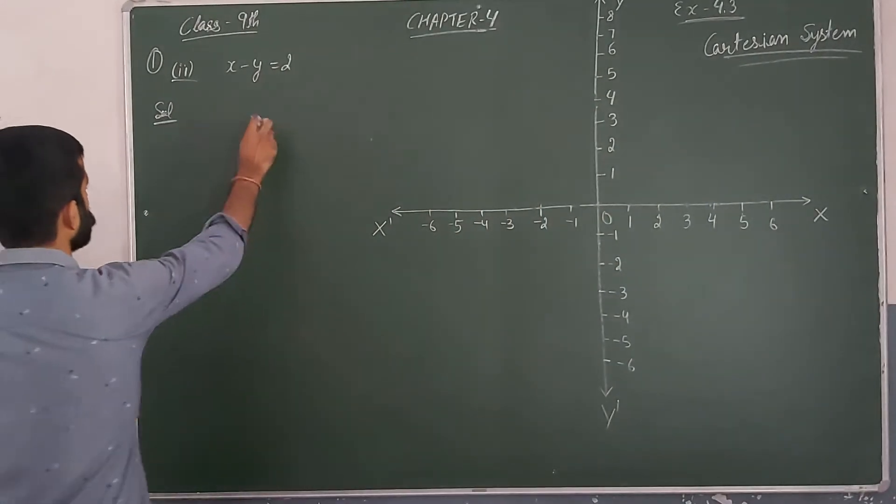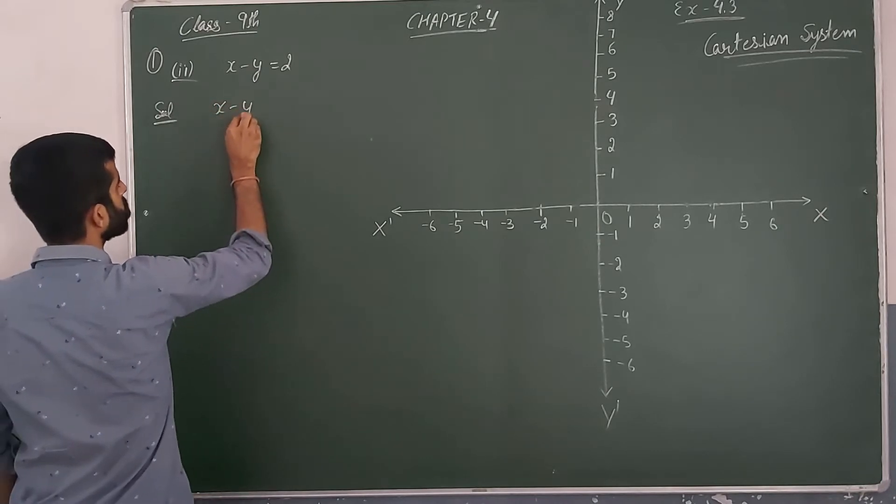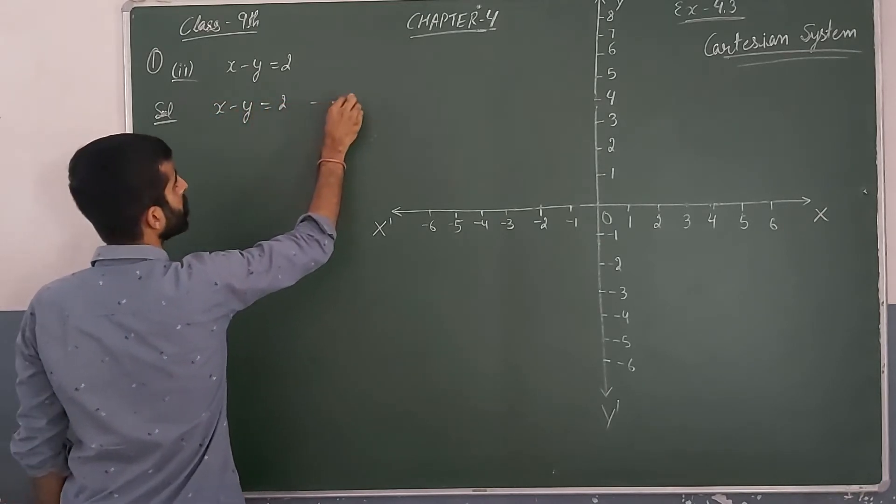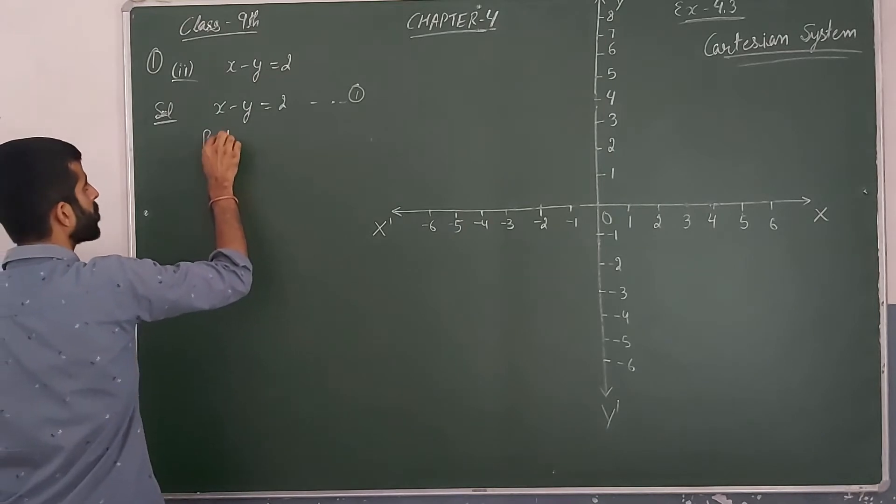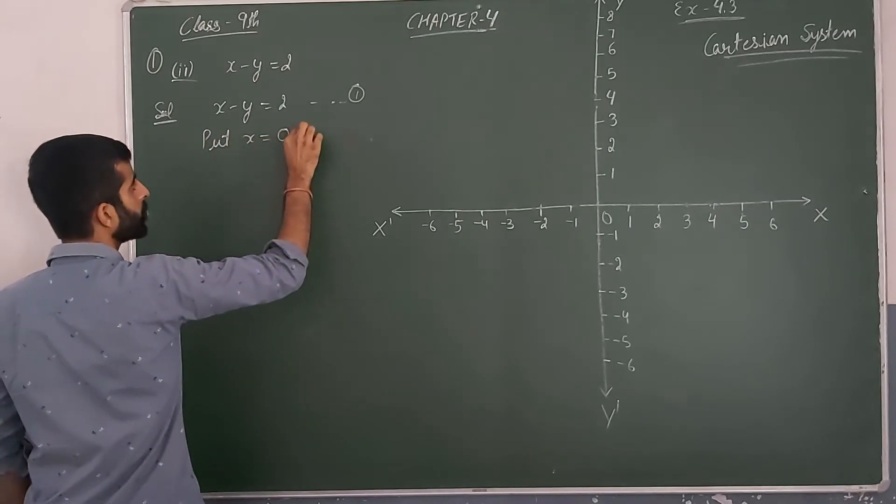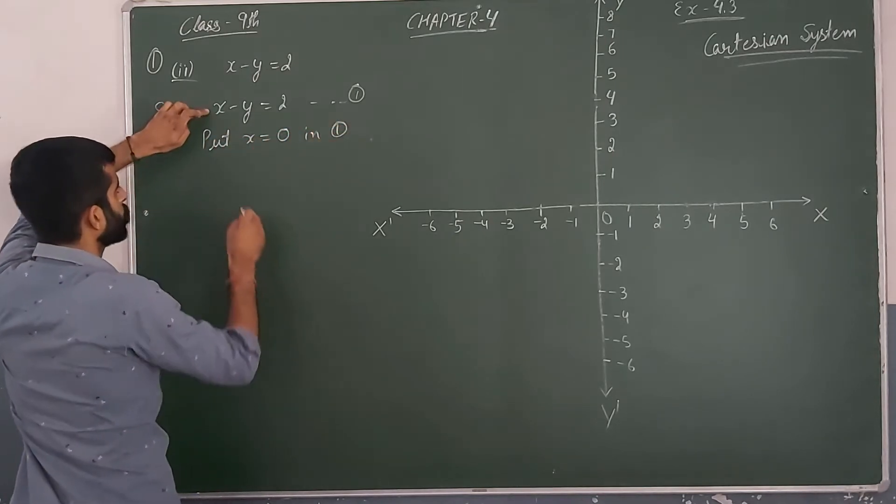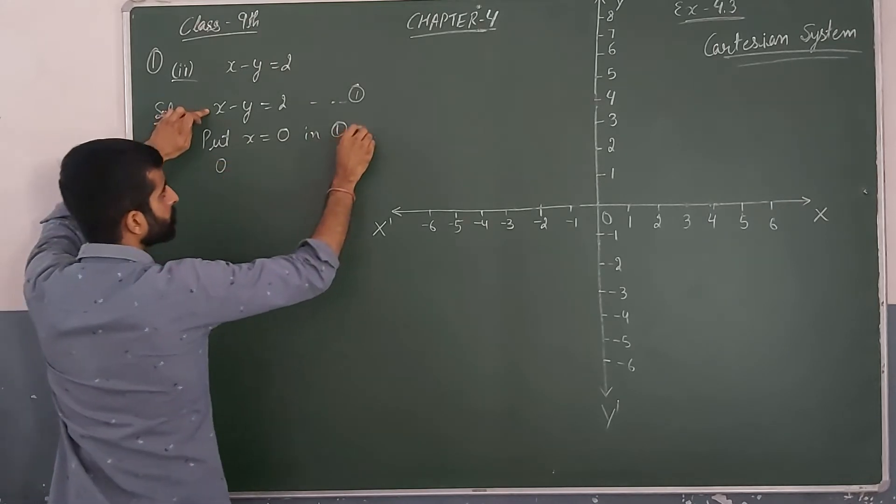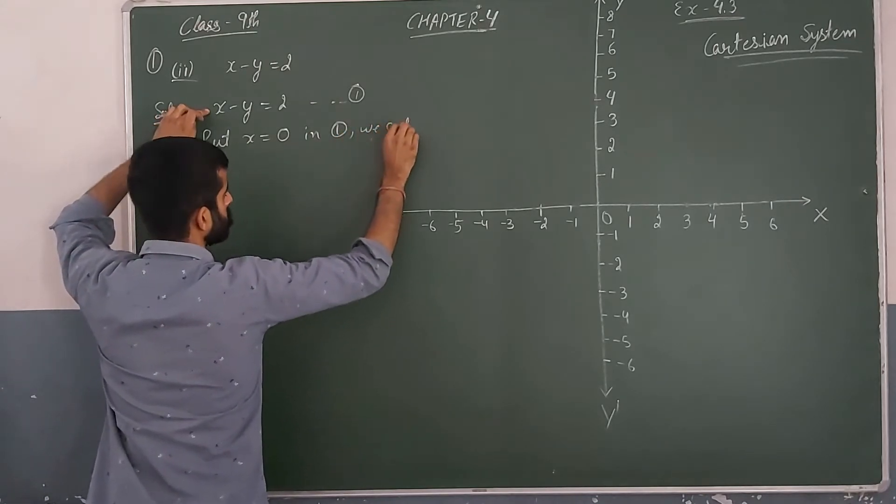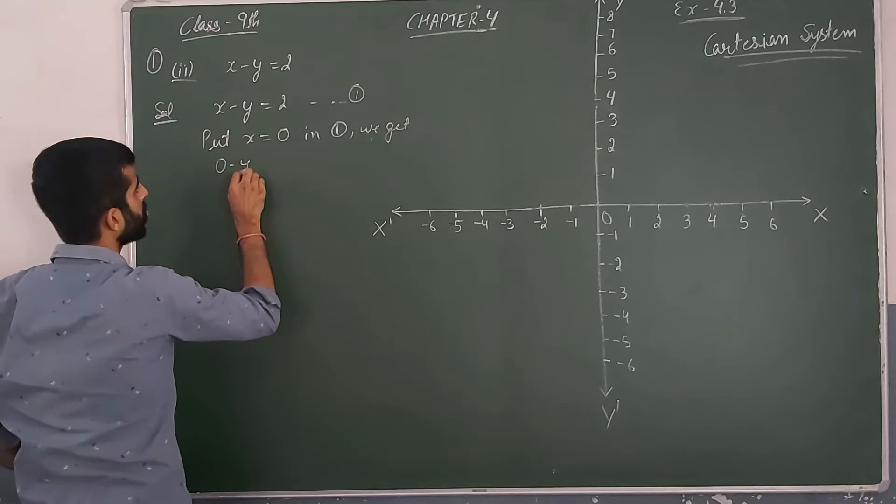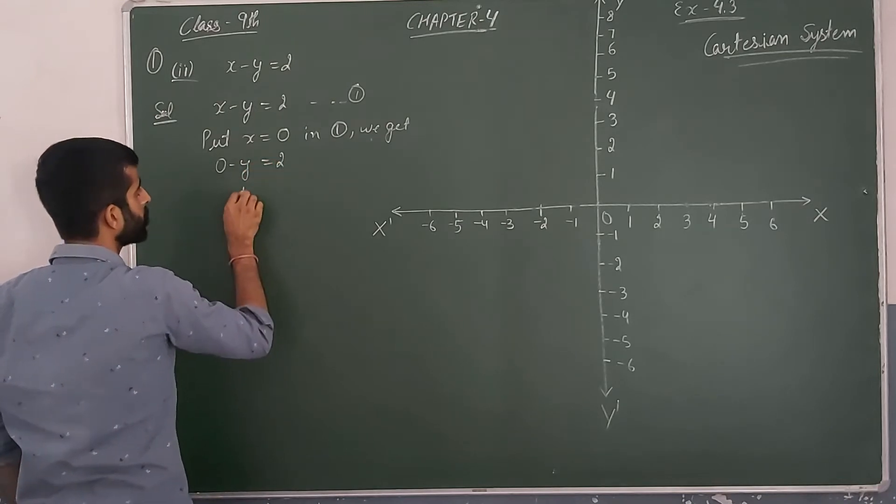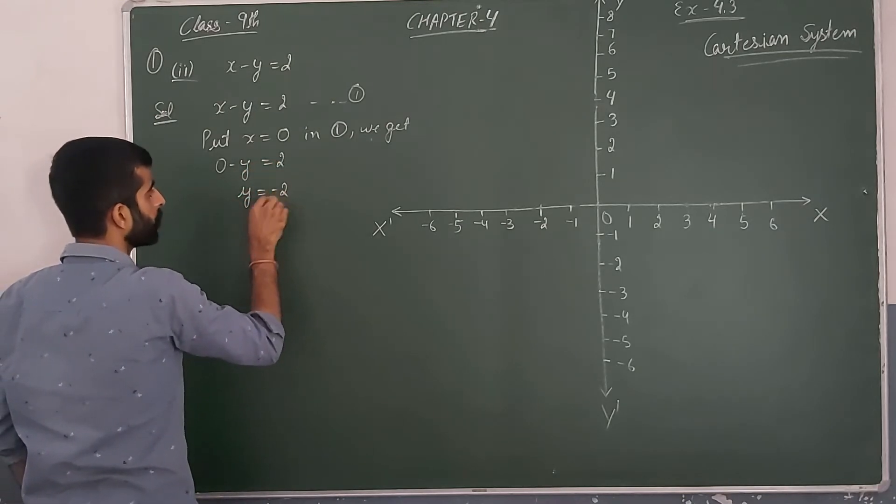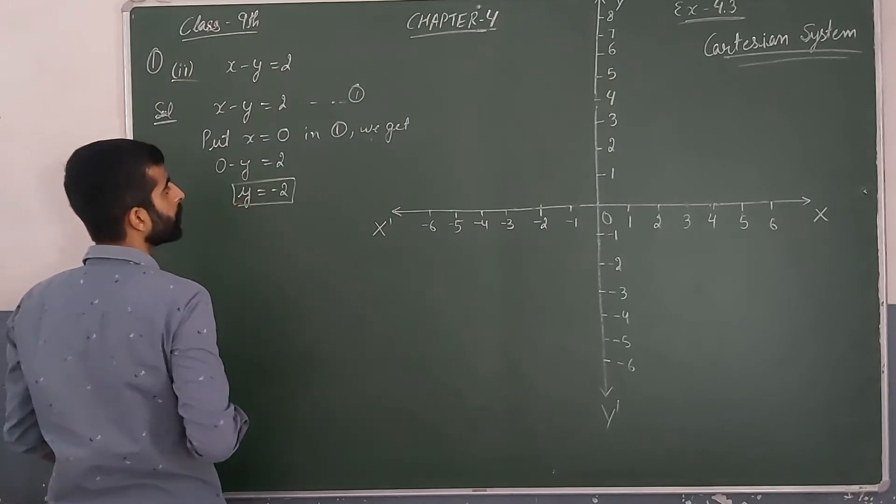So let this be equation number one. We will put x is equal to 0. When x equals 0, we get 0 minus y is equal to 2, that is y is equal to minus 2.